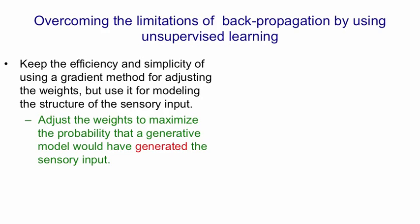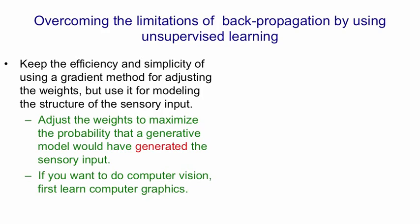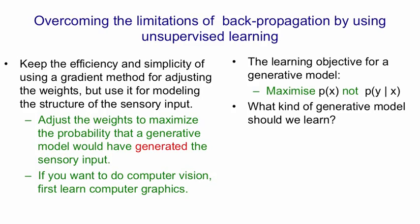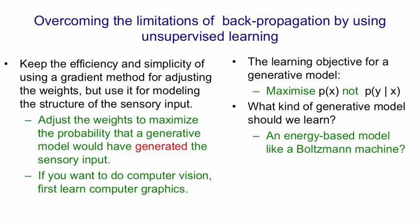We already saw that in learning Boltzmann machines. And one way to think about it is, if you want to do computer vision, you should first learn to do computer graphics. To first order, computer graphics works and computer vision doesn't. The learning objective for a generative model, as we saw with Boltzmann machines, is to maximise the probability of the observed data, not to maximise the probability of labels given inputs. Then the question arises, what kind of generative model should we learn? We might learn an energy-based model like a Boltzmann machine, or we might learn a causal model made of idealised neurons, and that's what we'll look at first.